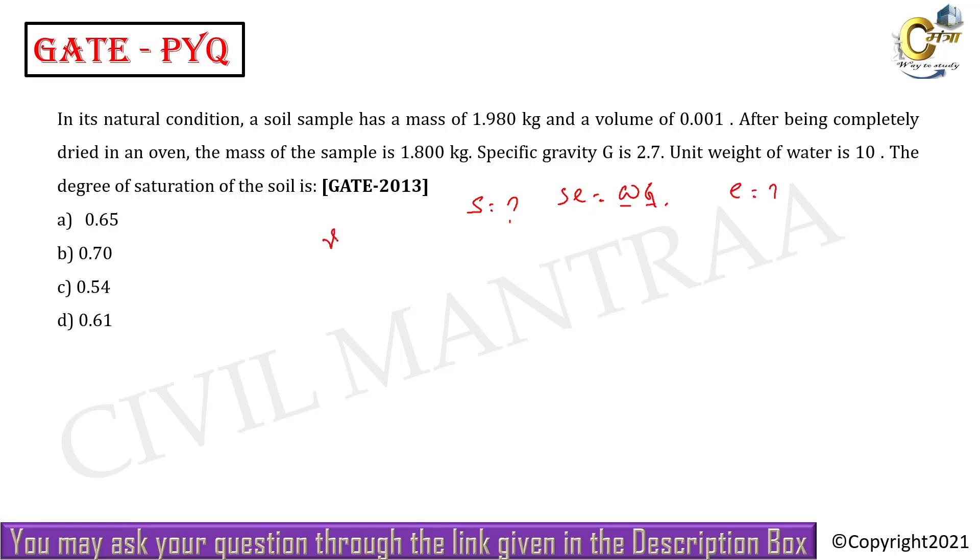Gamma t is given to you as w by V. So gamma t is W equals 1.980 by 0.001 m³. If you calculate, that is 19.8 kN per meter cube.